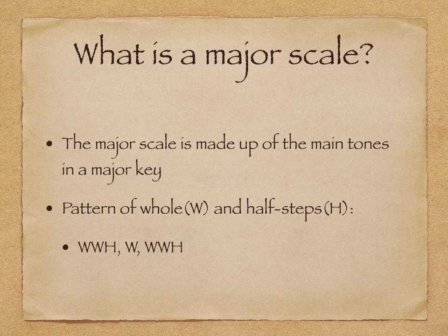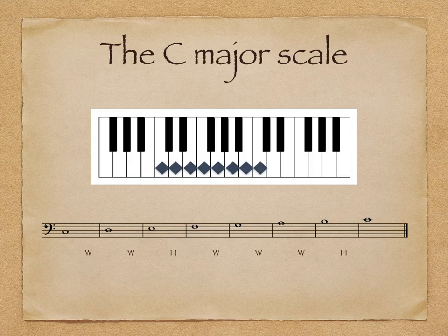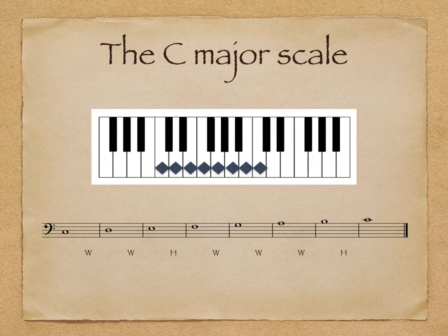What is a major scale? The major scale is made up of the main tones in a major key. It follows a pattern of whole and half steps: whole, whole, half, whole, whole, whole, half. This asymmetrical layout gives each member of the scale a unique position, name, and syllable. For instance, here's the C major scale — it's called the C major scale because C is the bottom-most note, also known as scale degree 1. Looking at the keyboard above, you can see the pattern of whole and half steps used to create the C major scale. It sounds like this.